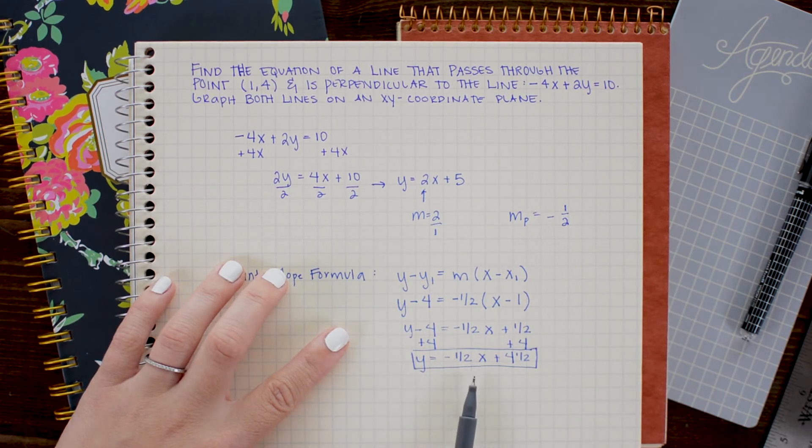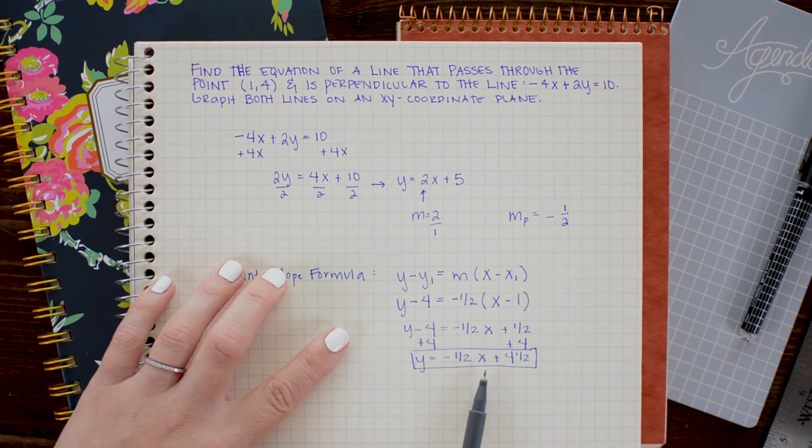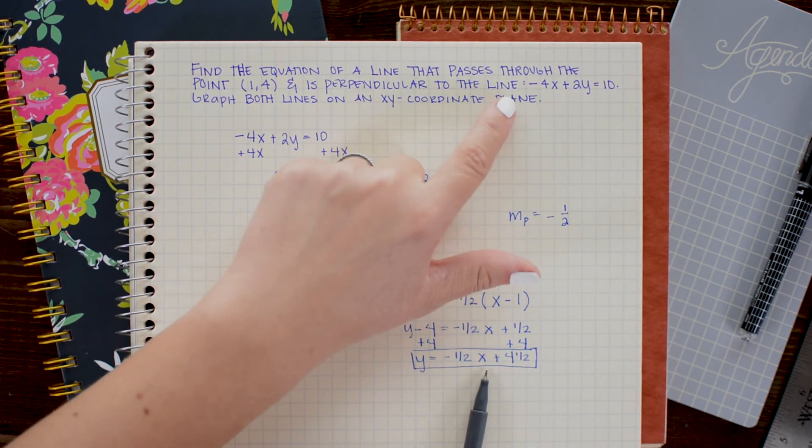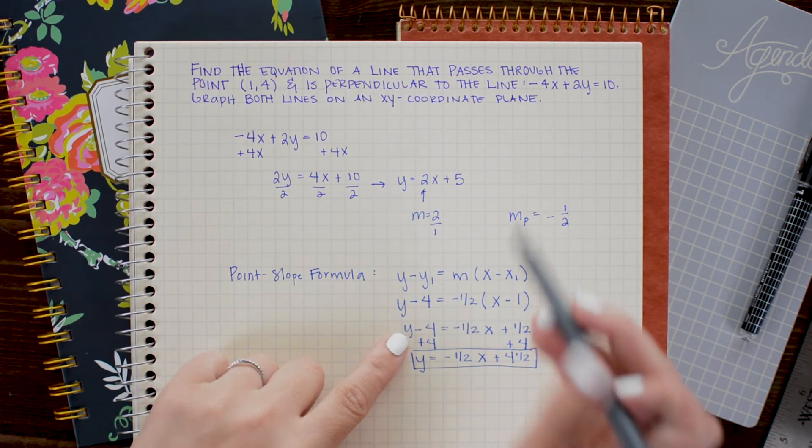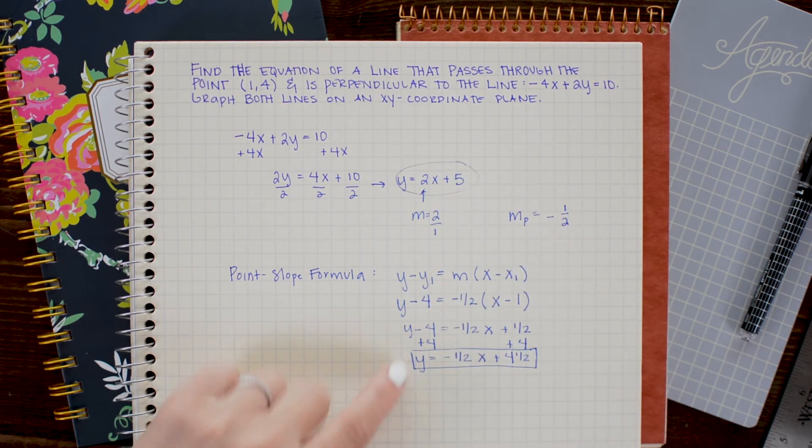y equals negative one-half x plus four and a half will be the equation of the line that is perpendicular to our original line. And of course, to demonstrate that, we are going to graph both our original line and our perpendicular line on the same coordinate axis.